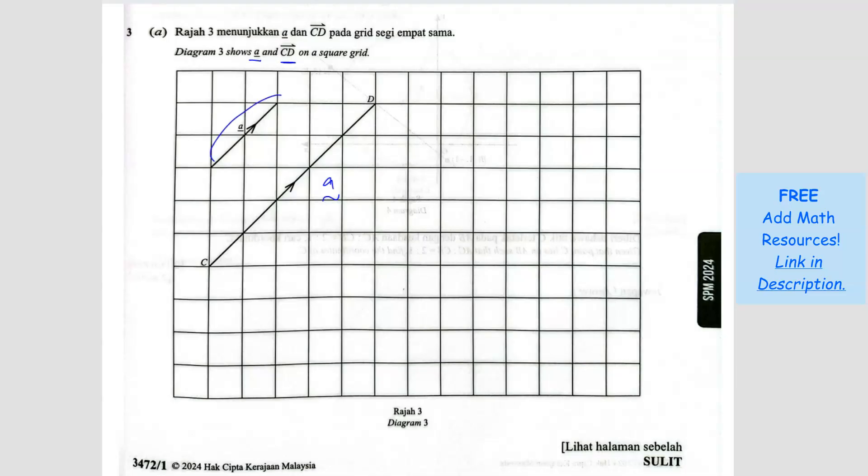So A is actually two boxes, right? So CD will be how many times of A? You've got one, two, and then another half. So it's two and a half. So that means we can say that CD is two and a half of the vector A.